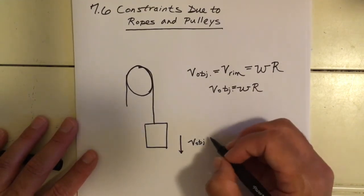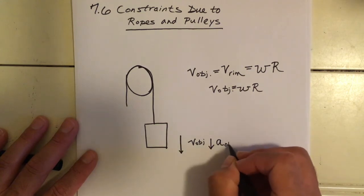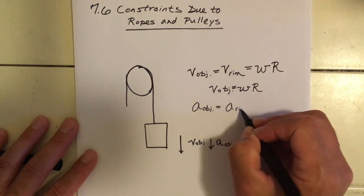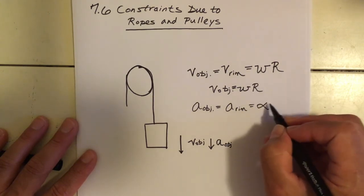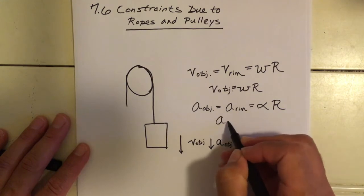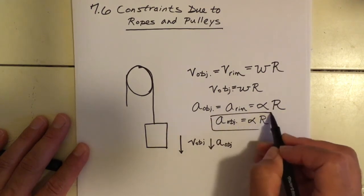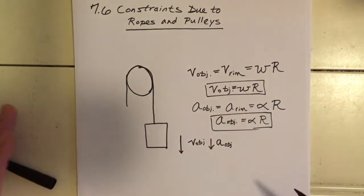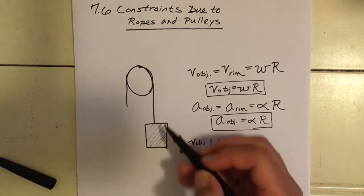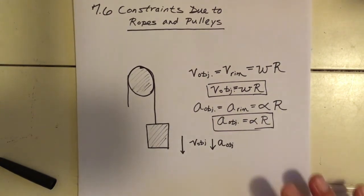Similarly, if the object has an acceleration directed downwards, the acceleration of the object equals the acceleration of the rim, which equals angular acceleration times r. So the acceleration of the object is equal to αr. This connection arises because the object and pulley are connected by a rope.